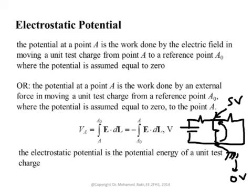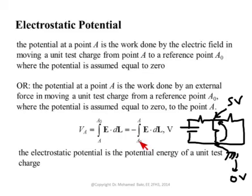The electrostatic potential of a point A is defined relative to a reference point A₀. A₀ replaces B from the previous formula. The potential VA is the work done by an external force in moving a unit charge from reference point A₀ to point A. Using the same formula as before, but replacing B with A₀ and setting the voltage at A₀ to zero, we get VA equal to minus the integral from A₀ to A of E dot dL. This is exactly what you do in electrical circuits — you select a ground and assign it zero voltage.